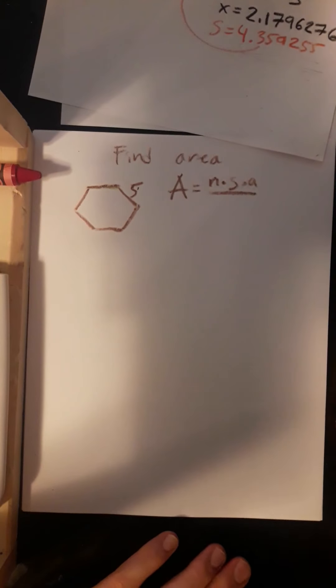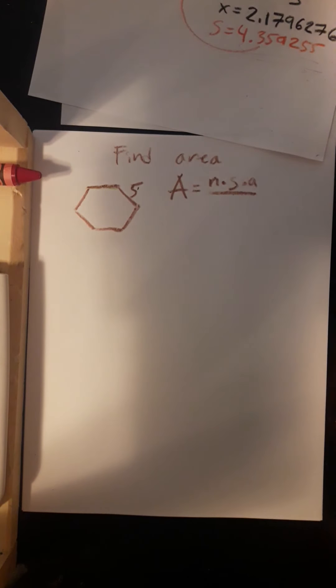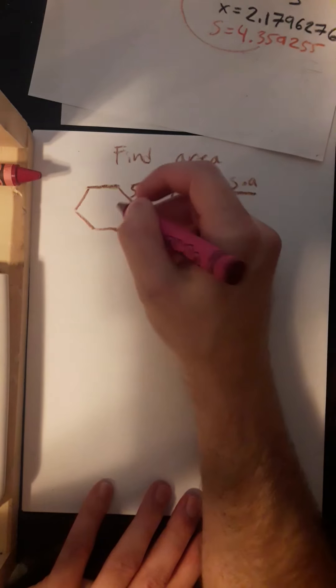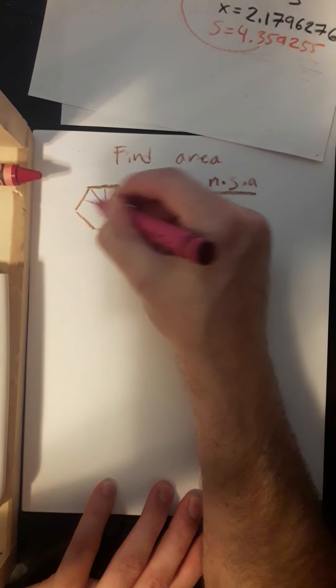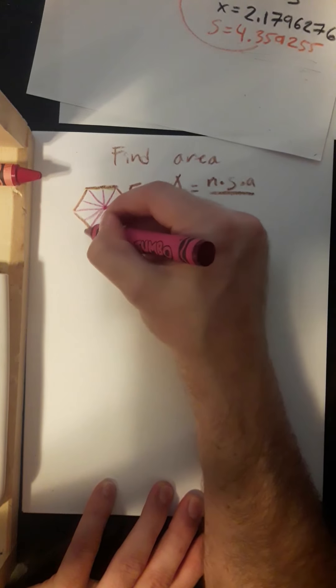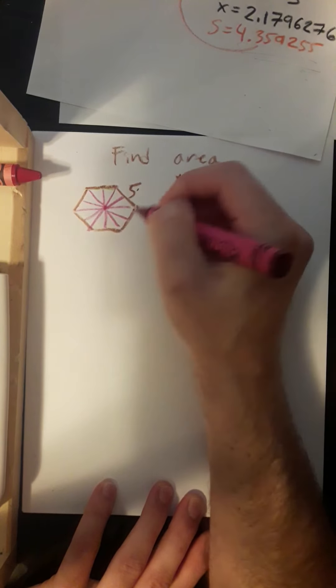Well, we need to find the apothem. Now, we learned from our last video that this can be split into triangles, so we can find the angle measure. And we're going to end up having to use trig.